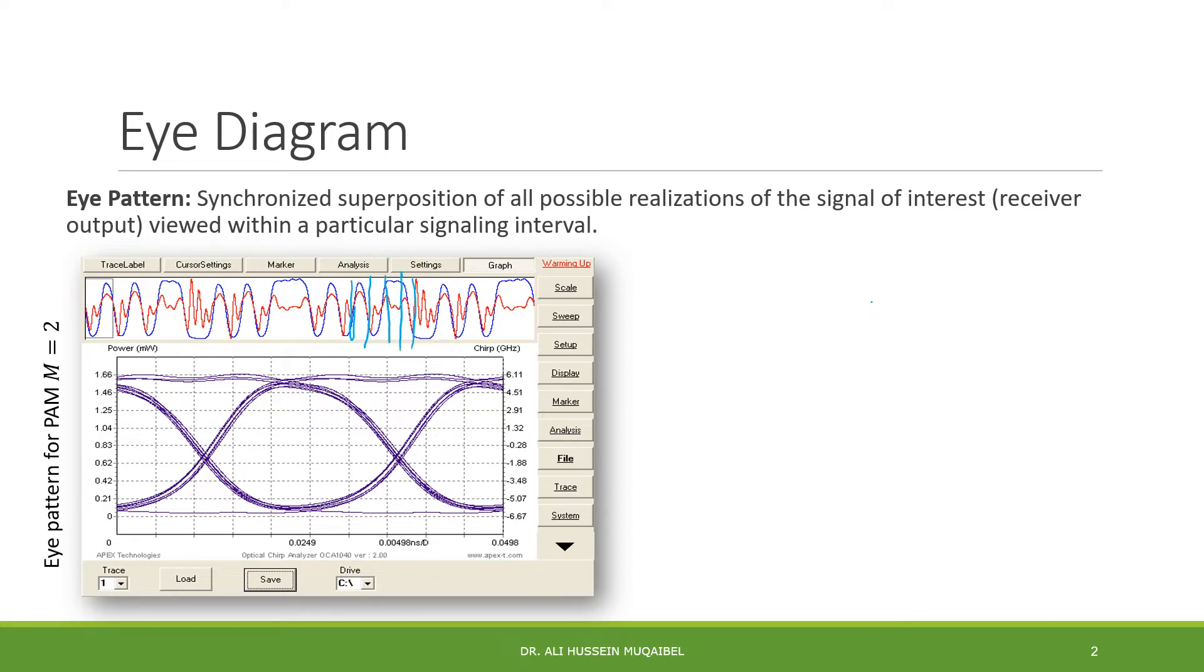Then we can combine them all together. We superimpose them on top of each other. What we will get is either what you see in this diagram, either a positive pulse or a negative one, and because of ISI, inter-symbol interference, we will have some values in between. So this is called an eye diagram because it looks like an eye.